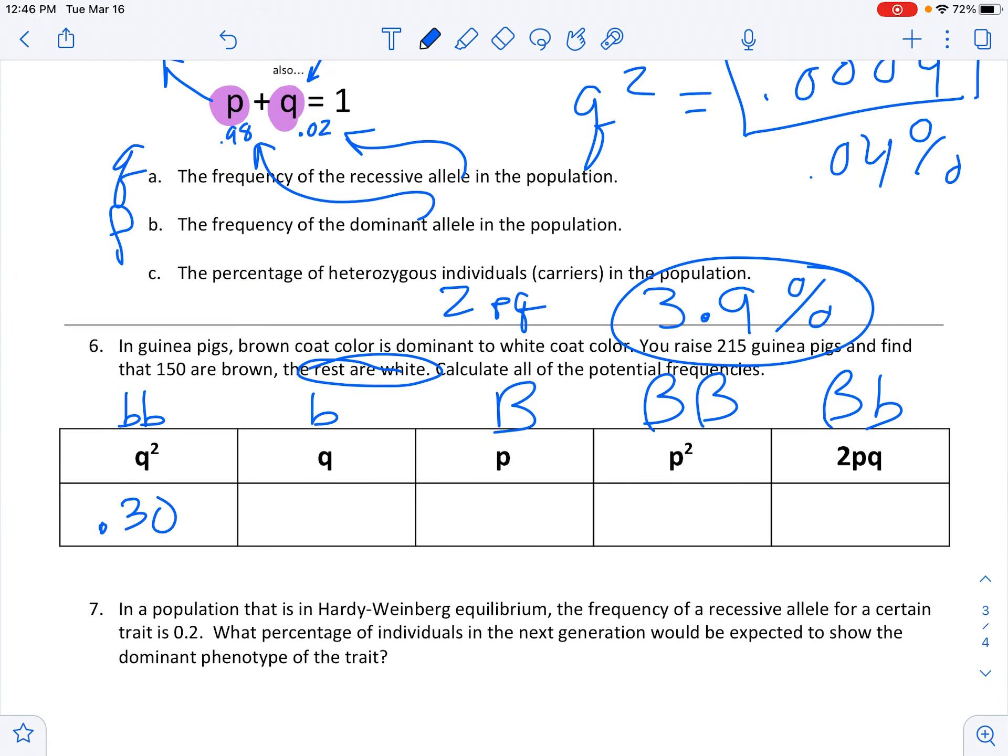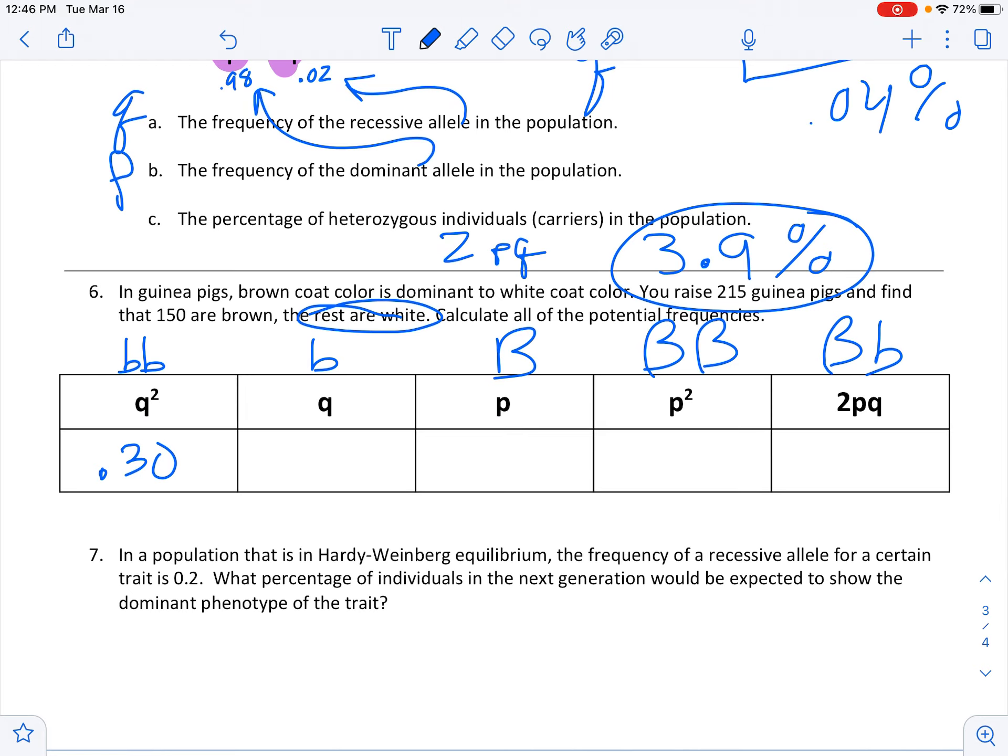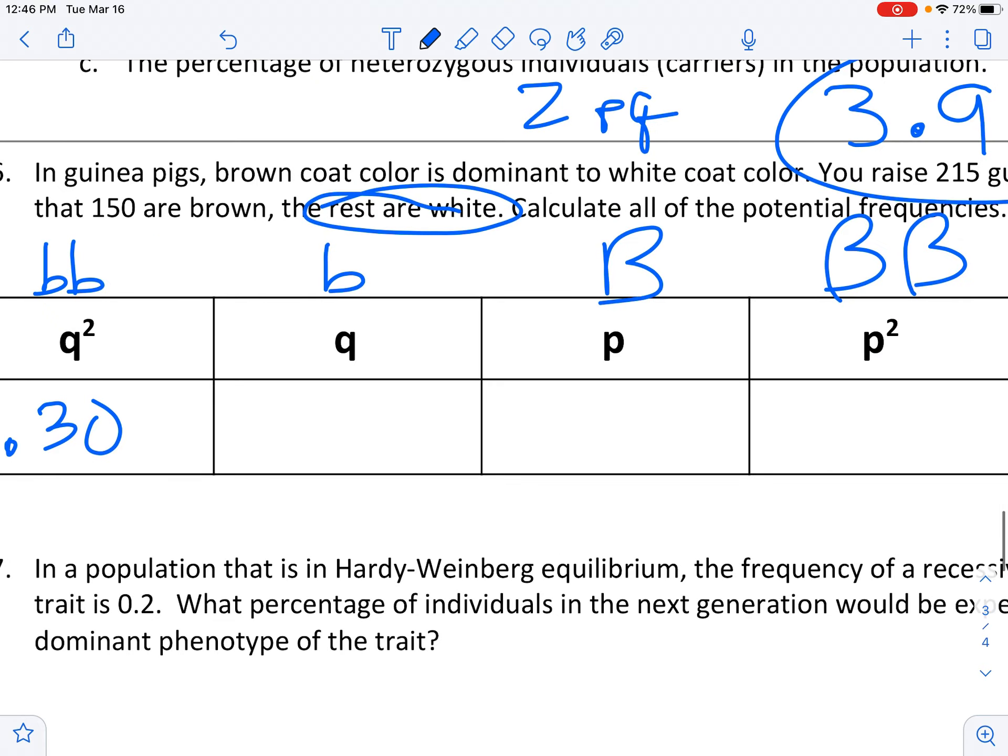So it says calculate all the potential frequencies. So let's kind of, here we go. 0.3, what's the square root of 0.3? 0.55. And then p must be 0.45.